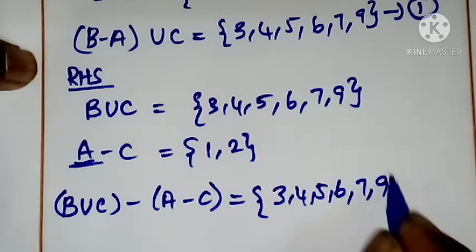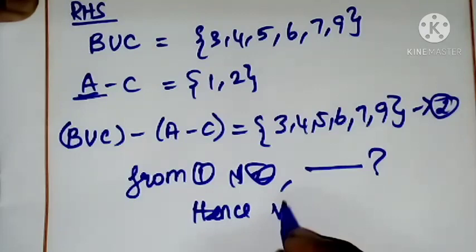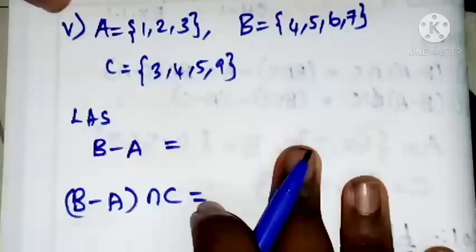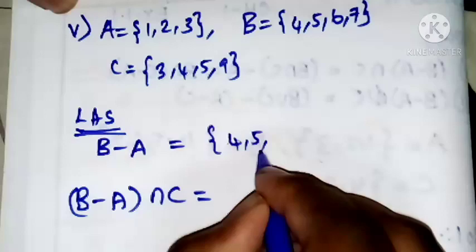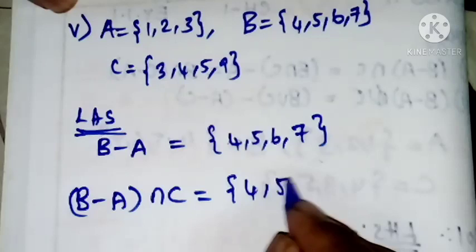From equations 1 and 2: A union C minus A intersection C gives {4, 5, 6, 7}. 5th subdivision LHS B-A gives {4, 5, 6, 7}. This intersection gives {4, 5}. C-A, this is equation number 3.